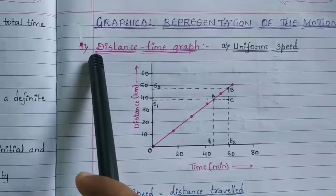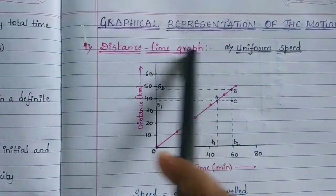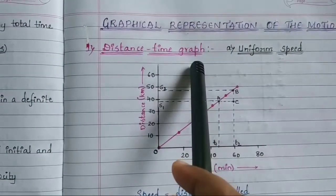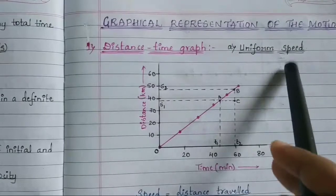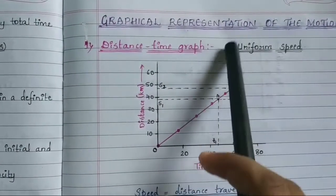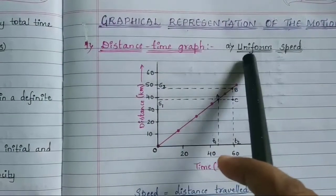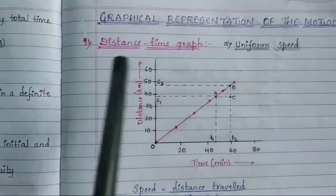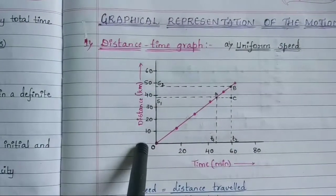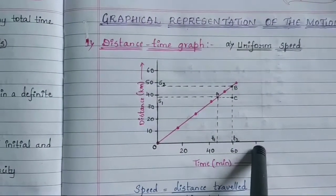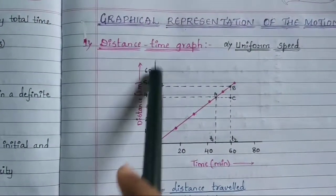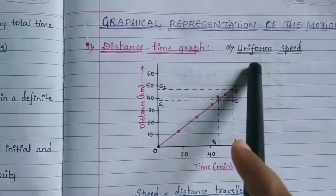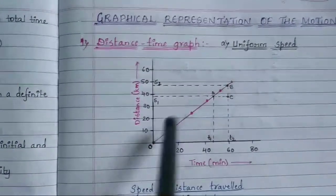The first one we will study is the distance-time graph. You can see a graph here — this is nothing but a distance-time graph in the case of uniform speed.